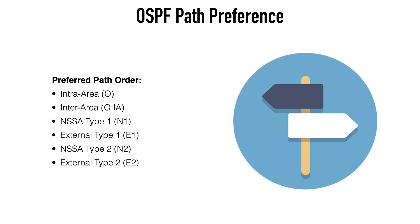The preferred order is intra-area first, followed by inter-area, then NSSA type 1 and external type 1, followed by NSSA type 2, and finally external type 2. Path selection happens first based on the route type, followed then by the cost. So for example, if we have a prefix learned as both intra-area and inter-area, the intra-area path is preferred even if the cost of the inter-area path is lower.